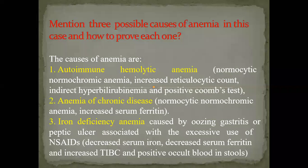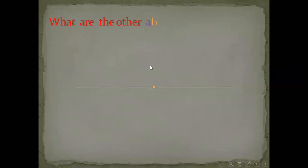Regarding occult blood in stool: it can be falsely negative if the specific sample did not contain blood, or falsely positive if the patient ate meat, took iron supplements, or has a local condition like piles or anal fissure. These are all the forms of anemia possible in systemic lupus.